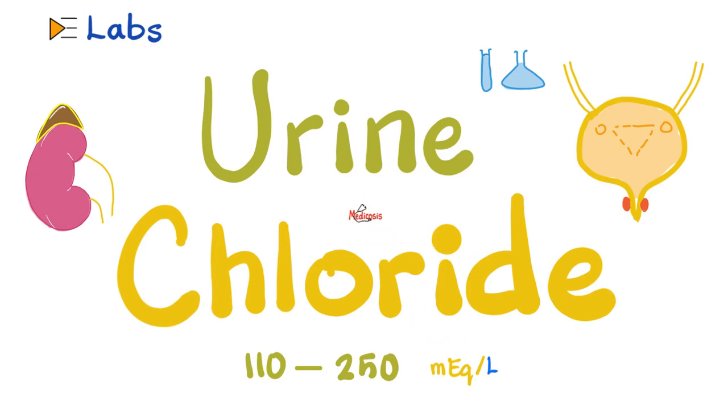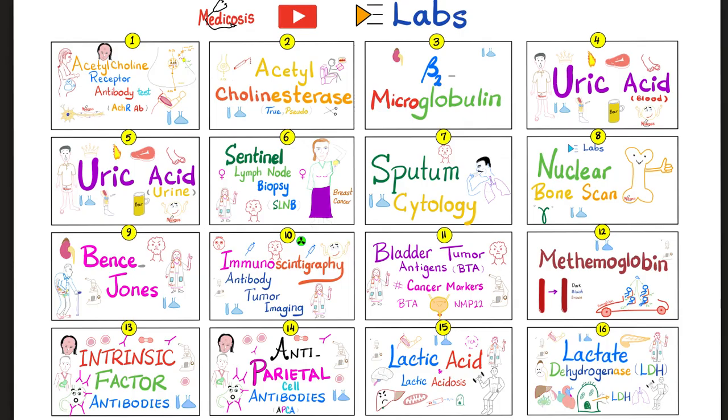In the previous videos, we talked about beta-2-microglobulin, methemoglobin, sputum cytology, lactic acid, lactate dehydrogenase, and uric acid in the blood and urine. In the previous video, we talked about chloride in the blood, but today we're talking about chloride in the urine. You gotta watch the previous video before this one, otherwise this video is not gonna make sense. Please watch the videos in this playlist in order.